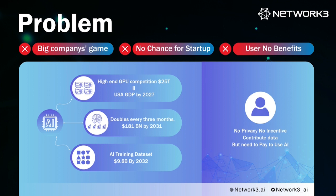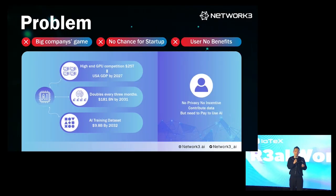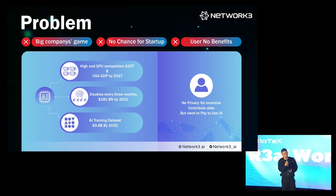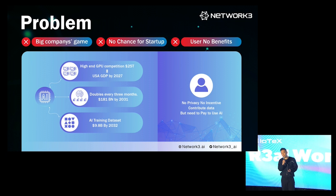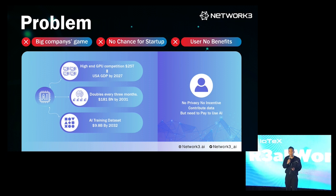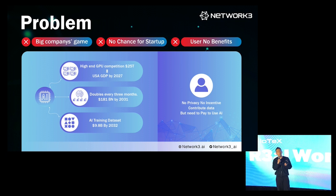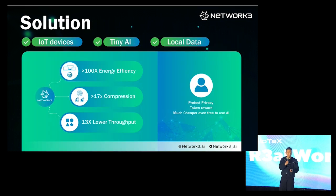The current problem of the AI industry is that big companies control everything, including high-end compute power, high-end talented people, and training data sets. But as the end user, you don't have incentive at all, you don't have privacy at all, and you also need to pay to use the AI model — which is ridiculous.